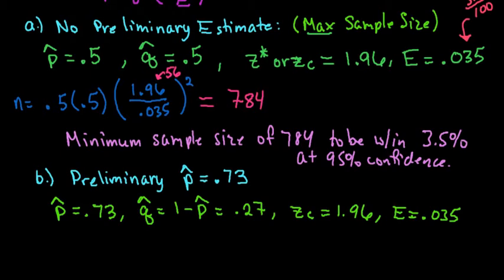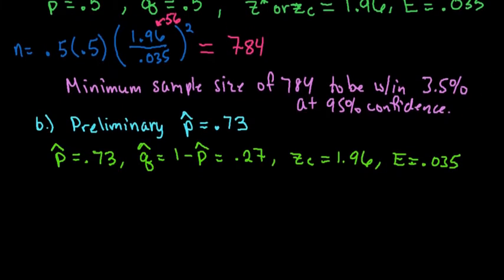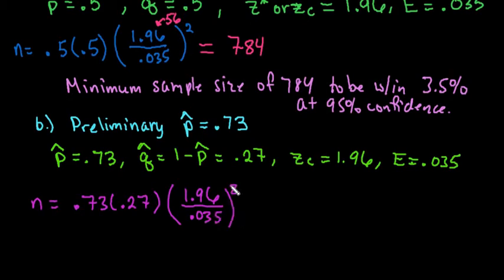If we plug these into our formula, we would say n equals 0.73 times 0.27. Then in parentheses, we would put the 1.96 divided by 0.035 squared. It's very important that you do this part first and that you put it into your calculator correctly. I've already put it into my calculator, and with this one, I ended up with 618.106.